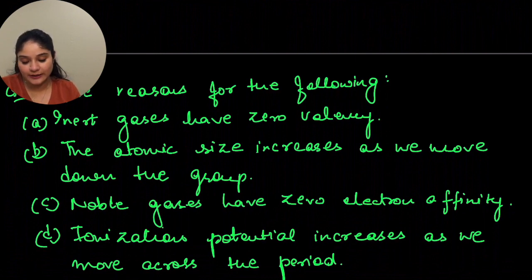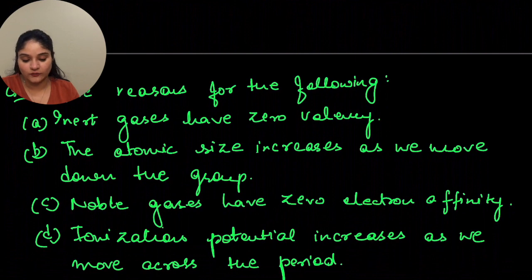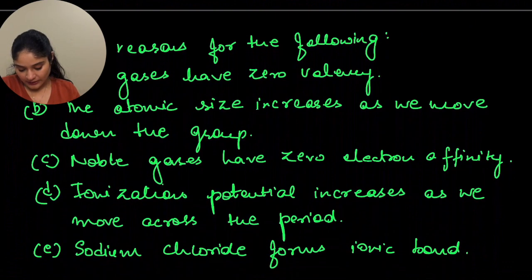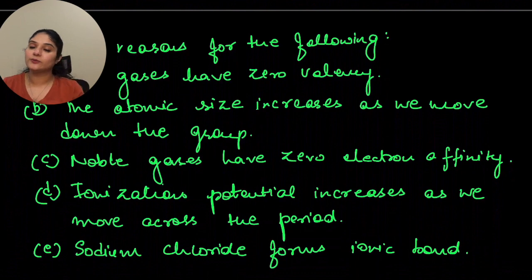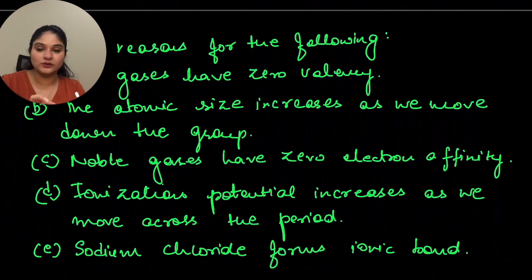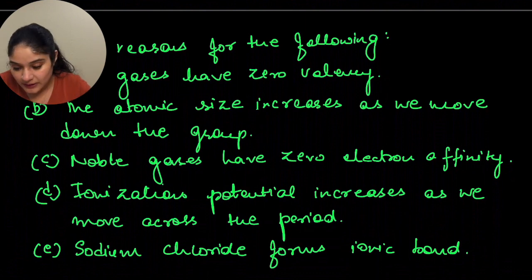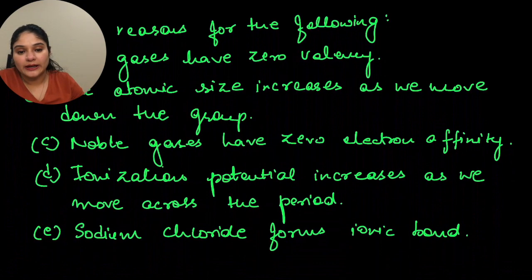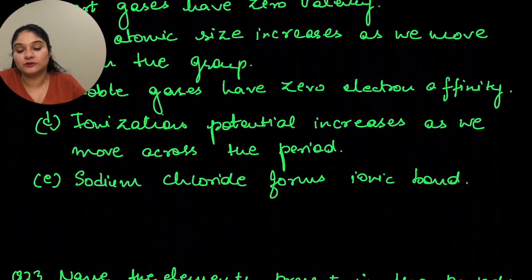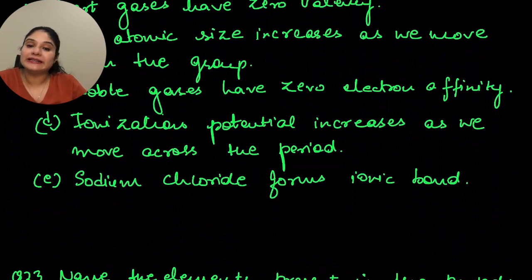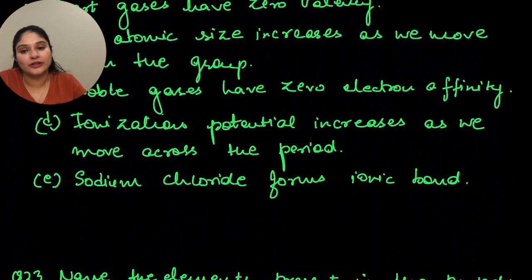Noble gases have zero electron affinity: because their octet is complete, they have a stable electronic configuration and cannot accept electrons. Ionization potential increases as we move across the period: as you go across the period, the atomic size decreases, making it harder to remove electrons. Sodium chloride forms an ionic bond: sodium is a metallic element that can easily donate an electron to be stable, and chlorine is a non-metallic element that can easily accept one electron to be stable, so they form an ionic compound.